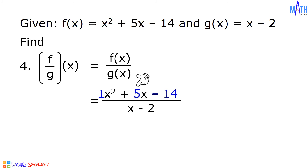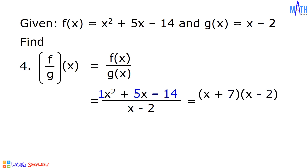We need factors of c that when added are equal to b, which is 5. The factors we need are 7 and negative 2, since 7 times negative 2 is equal to negative 14, and 7 plus negative 2 is equal to positive 5. So the factors of x squared plus 5x minus 14 are x plus 7 and x minus 2, all over x minus 2.